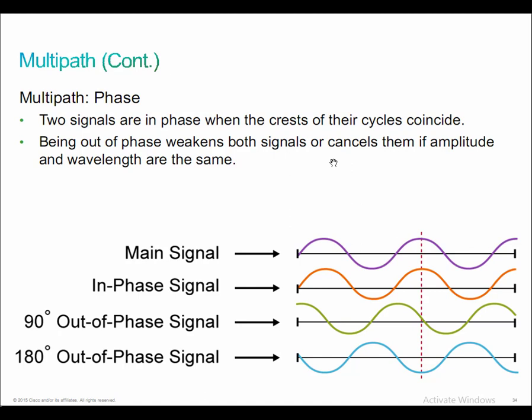There's no way to completely mitigate the multipath problem — radio frequencies are going to be reflected in any environment. We use technologies in software and hardware to deal with it: accepting a signal from one antenna or the other, but not both simultaneously. With 802.11ac technology, we actually utilize multipath to create a better signal through combining.